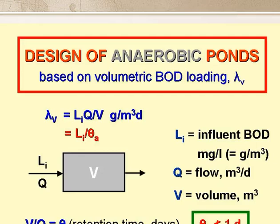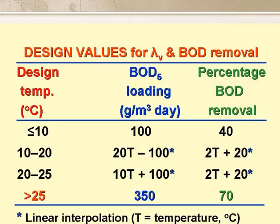The value of theta a should not be less than one day. This table gives the design values of lambda v. They are 100 grams per cubic metre per day at 10 degrees and below, 200 at 15 degrees, 300 at 20 degrees, and 350 at 25 degrees, with linear interpolation in between.